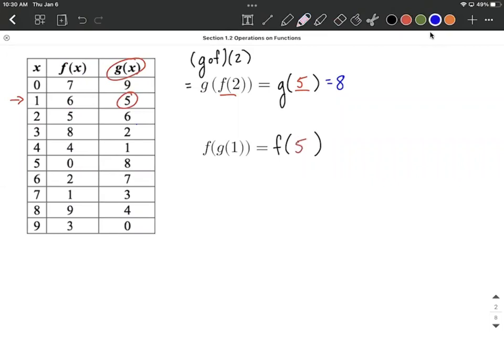But this time, we need to figure out what is f of 5. So an x value of 5 gets plugged in, this time into the function f of x, and our output is going to be a 0.